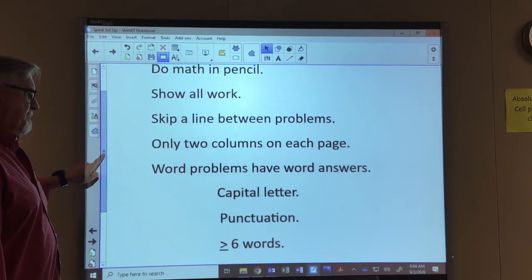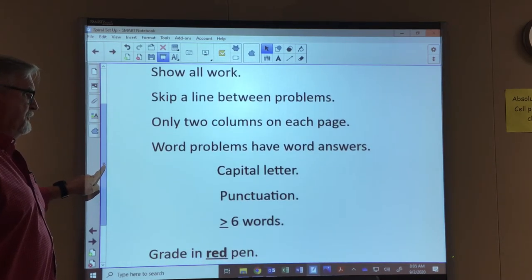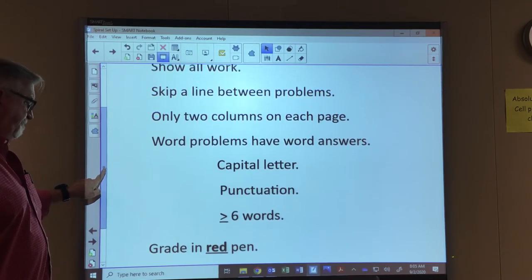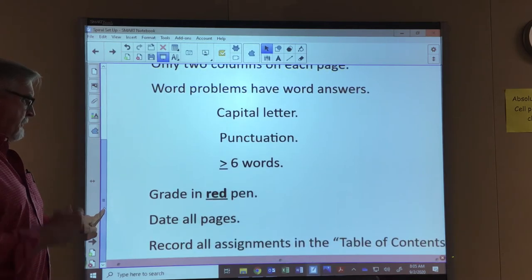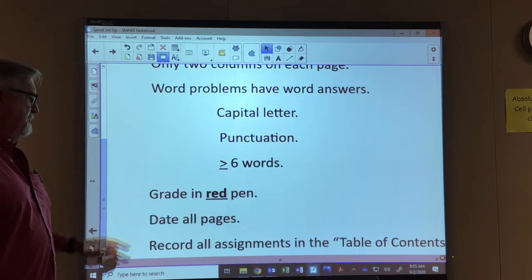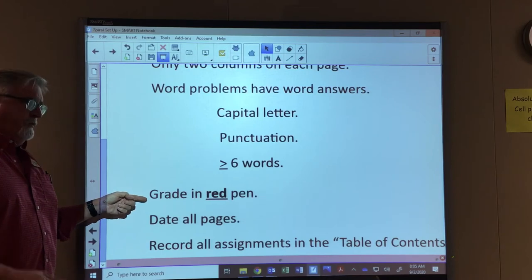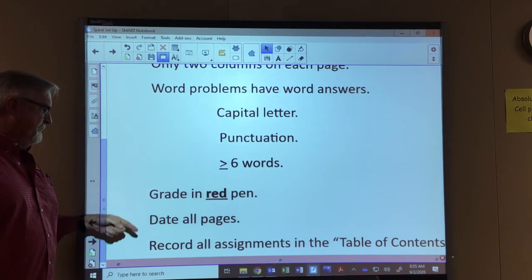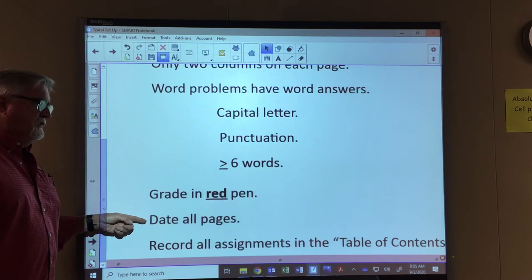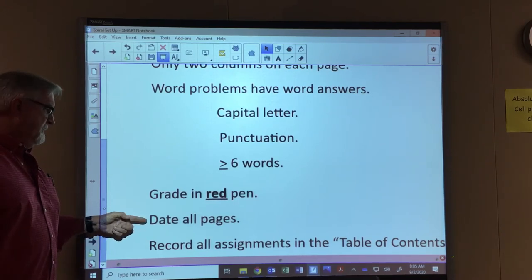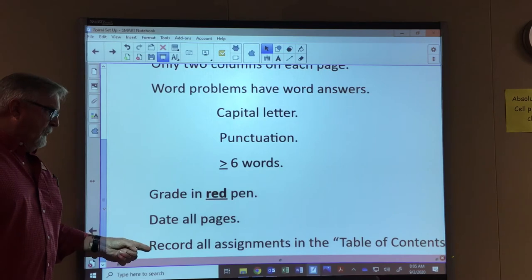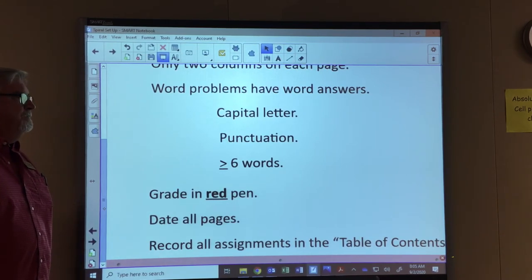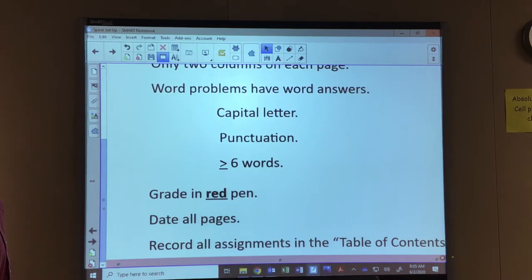They have a capital letter, they have punctuation, and they need to be at least—that's greater than or equal to—six words. As far as grading, we're going to grade all assignments in red pen. So if we're grading something in your spiral, it should be in red pen. You're going to date all pages—even though it's in your spiral, go ahead and put the date that you did it. Record all assignments in the table of contents.